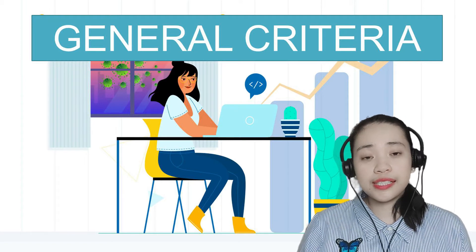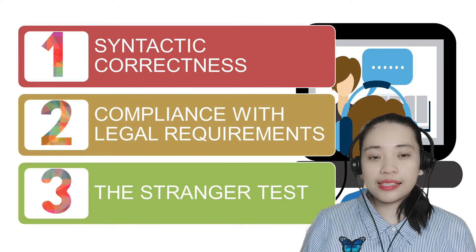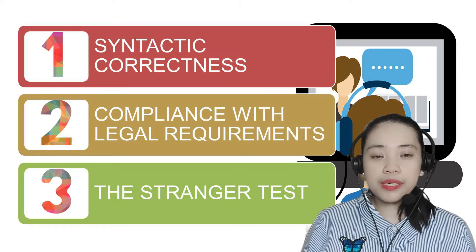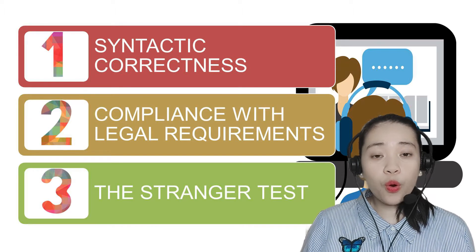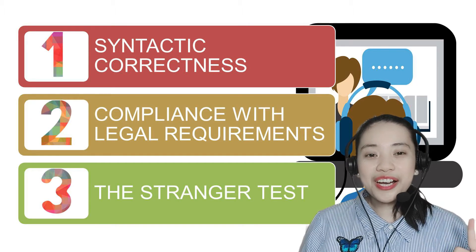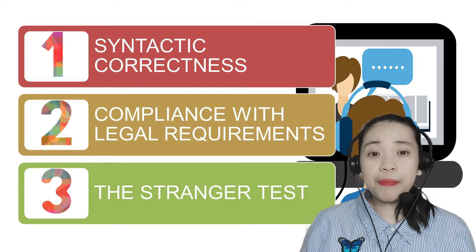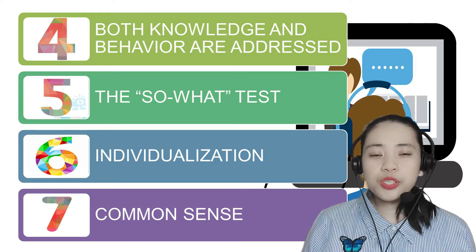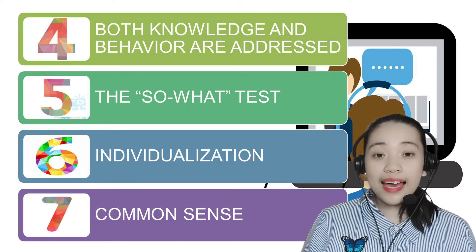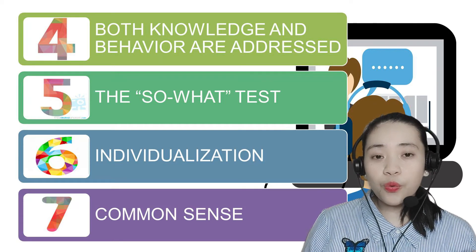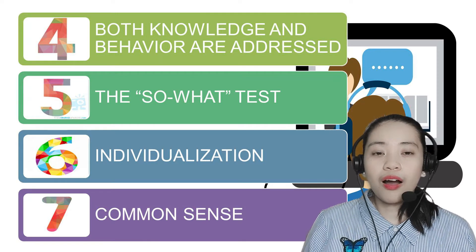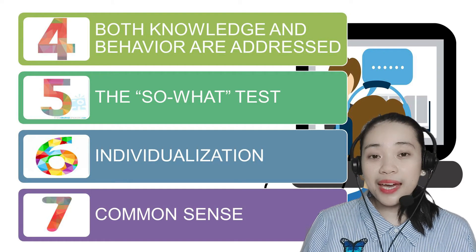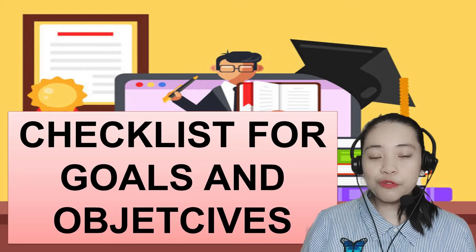Writing effective goals and objectives should also use the following general criteria. First, syntactic correctness — are the objectives syntactically correct? Second, compliance with legal requirements — do the objectives comply with the legal requirements of the course or subjects? Next, both knowledge and behavior are addressed — do the objectives address both knowledge and behavior? Then, the so-what test — do they pass the so-what test? Followed by individualization — are the objectives aligned? And lastly, common sense — do they make common sense?